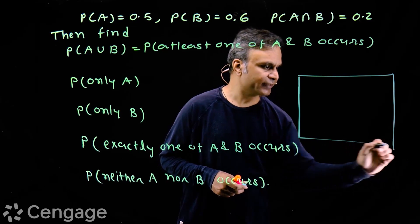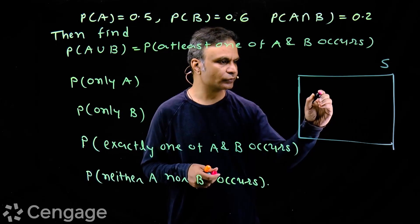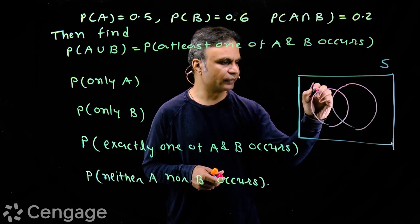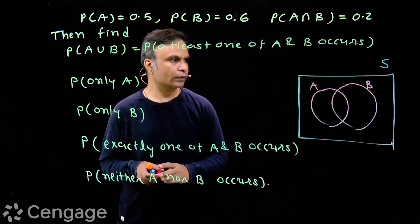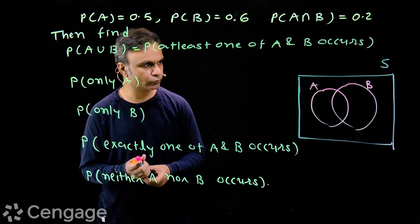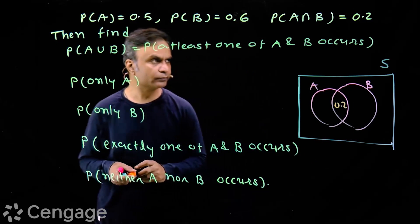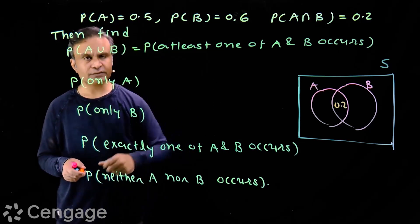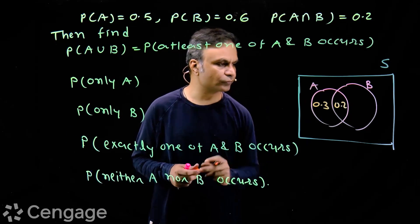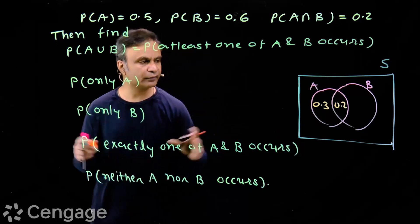Here we have sample space S. Events A and B are subsets of S, so we draw event A and event B. Probability of A intersection B is 0.2, so we put the value 0.2 in the region of A intersection B. Probability of event A is 0.5, so we put 0.3 in the only-A region — since 0.3 plus 0.2 equals 0.5. This is how we fill the different regions of the Venn diagram.